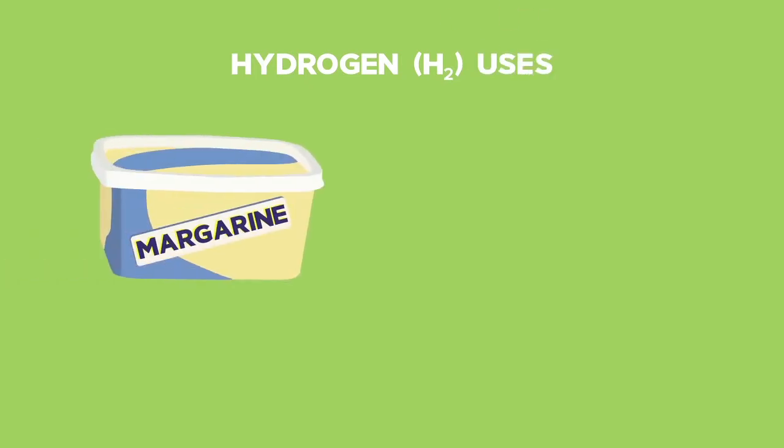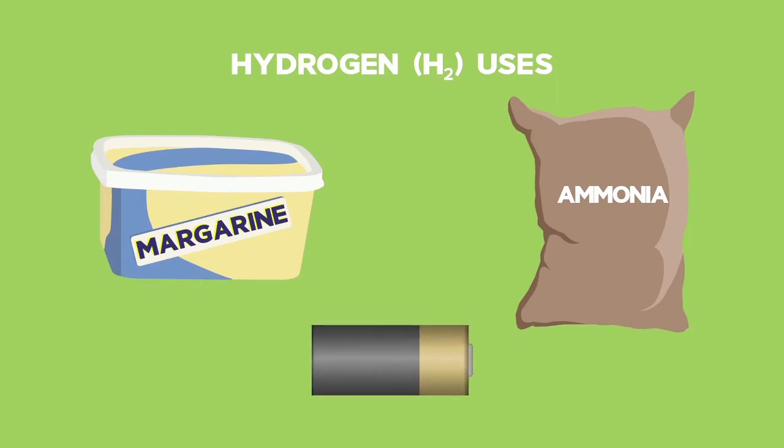The hydrogen from the process is useful for making margarine. It's used in the making of ammonia in the Haber process, as well as being used as a fuel in some types of cells.